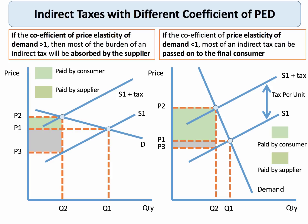If I then put in an inelastic demand curve — here's our tax per unit, the vertical distance between the supply curves — the consumer is paying most of the tax. There's the vertical distance; the producer absorbs only a little bit and has to pay a small percentage of the tax. The key thing for this question is that the tax per unit is the vertical distance between the two supply curves.